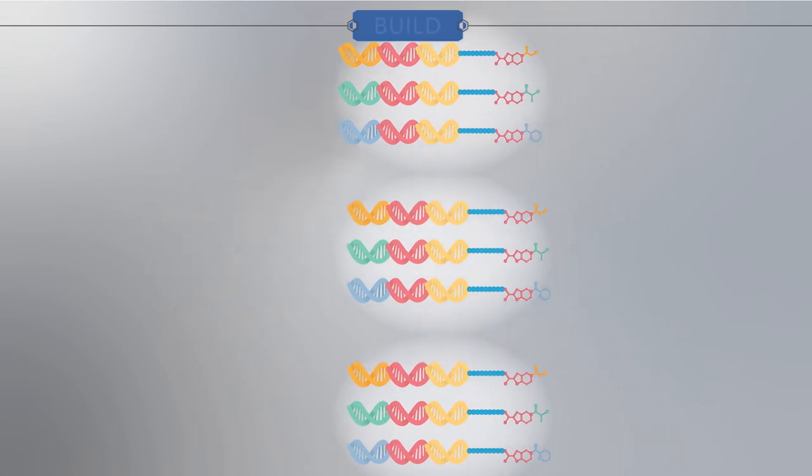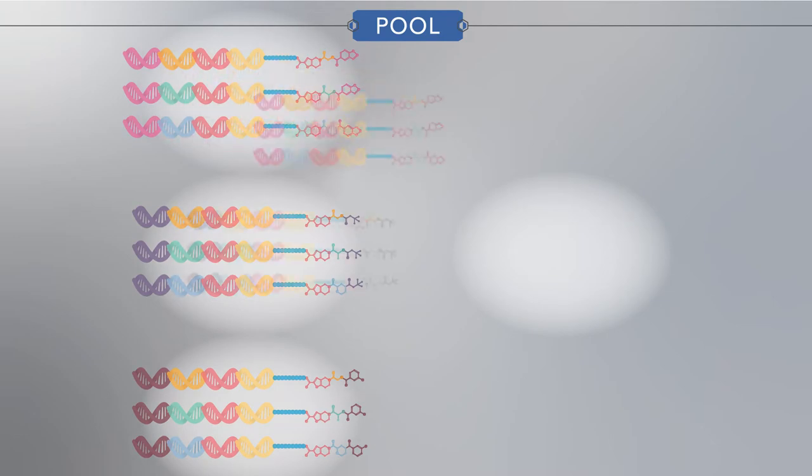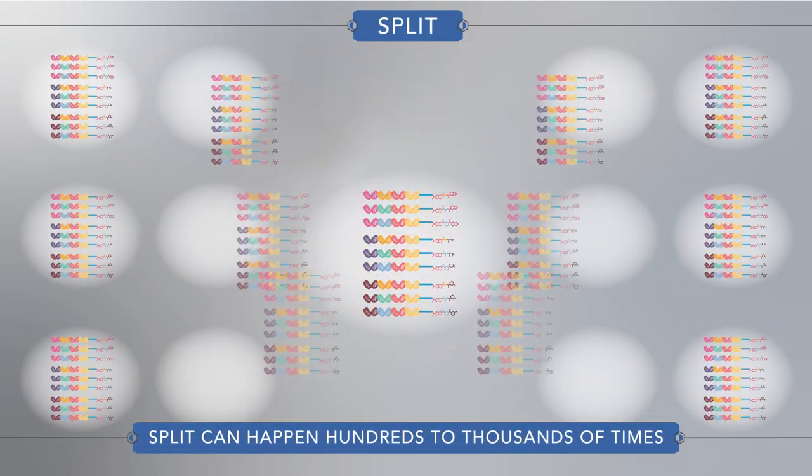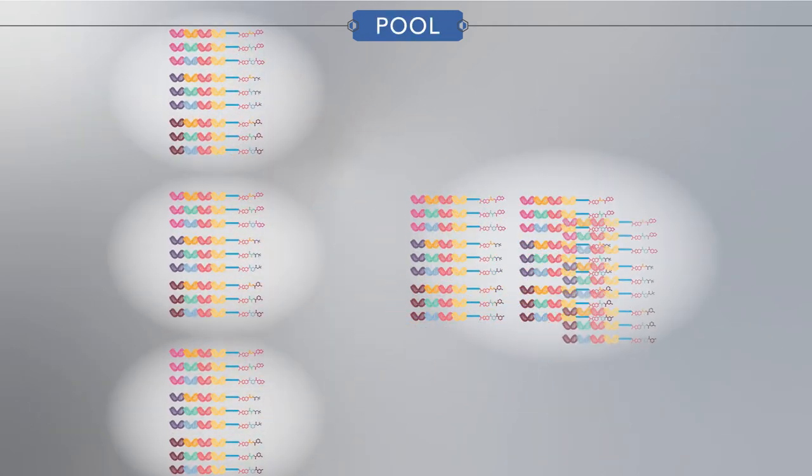However, intermediaries that share the next building block in common are pooled for reaction efficiency. This split and pool process can be repeated for different building blocks, so that vast compound libraries can be made efficiently and economically.